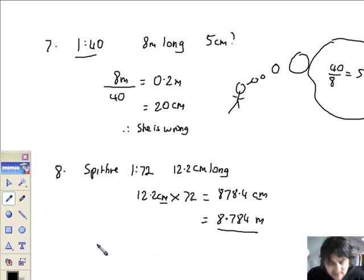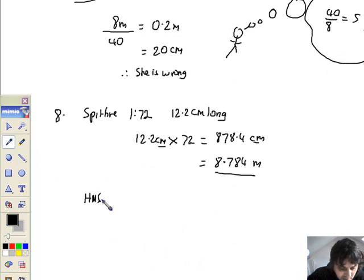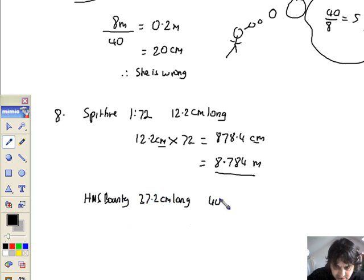He also has the HMS Bounty. Sounds like a ship. Her Majesty's Ship Bounty. The model is 37.2 centimetres long. The actual ship, this is the real ship, is 40.92 metres long. What is the scale of the model? In order to create a ratio, I need to compare like with like. Centimetres and metres are not the same. I can convert this to metres or I can convert this to centimetres. Leave this alone for now. 37.2 centimetres. And if I multiply this by 100, it's 4092 centimetres.